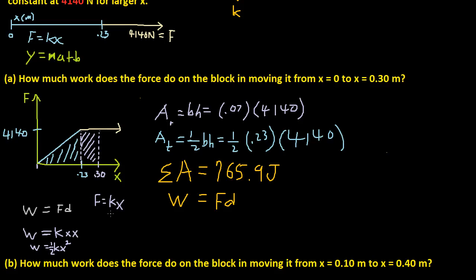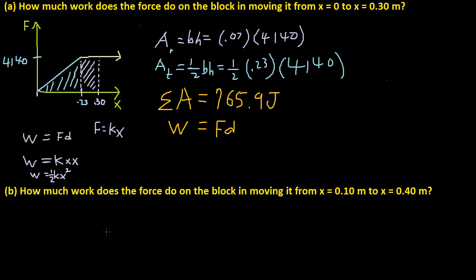Just in case that explanation was kind of confusing, let's do it this way. So the triangle, the area, we know that area of the triangle is, or we established that area of the triangle, the area calculated here is the work. So area, which is work, is equal to 1 half base times height, right?